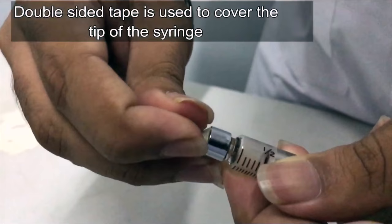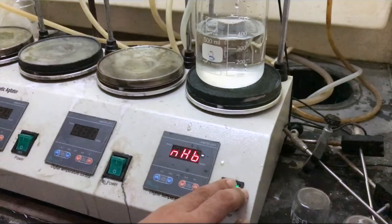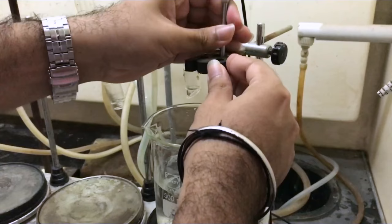Right after that, tape the syringe to make sure that there is no air leaking out, and then heat 400 ml of water in a beaker from room temperature up to 85 degrees Celsius.